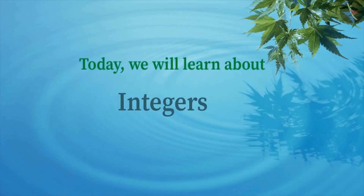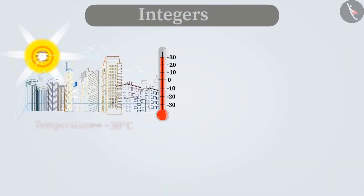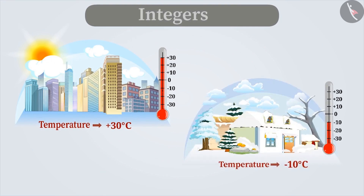Today, we will learn about integers. We come across many situations in our daily life where there is a need to represent numbers with a positive or a negative sign. For example, the temperature of Mumbai is usually above 0 degrees centigrade and is represented with a positive sign before the number. During winters, the temperature of Srinagar falls below 0 degrees centigrade, and this has a negative sign before the number.